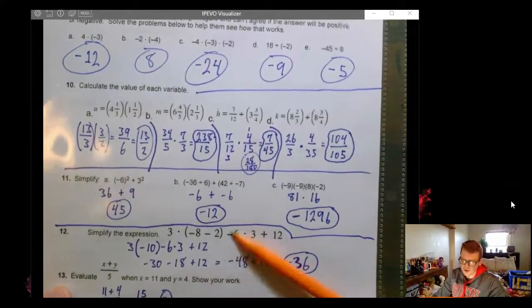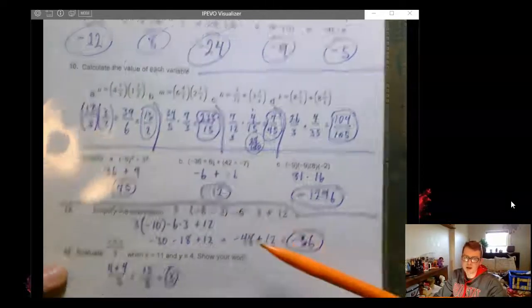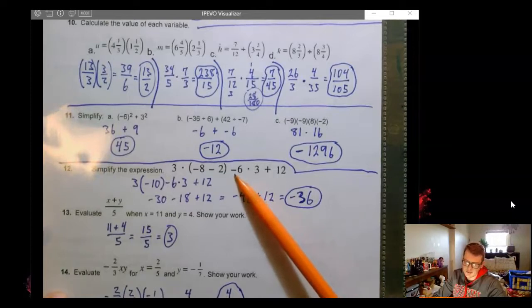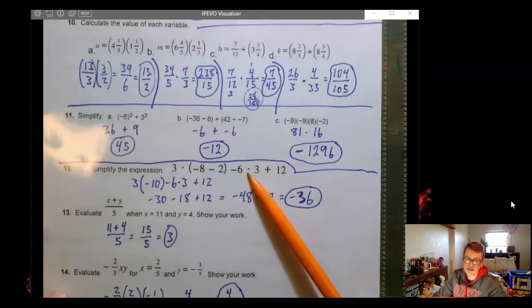Alright. So then more order of operations down here. The trap door that I kind of set for you guys is recognizing that this is subtraction. Right? This is minus 6.